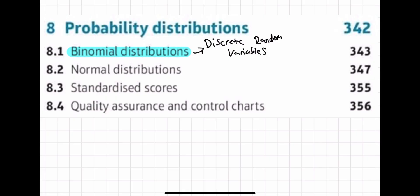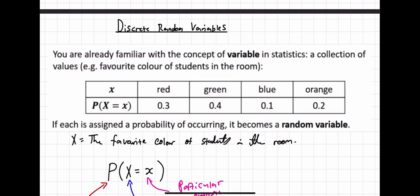Now let's look at what a discrete random variable is. A random variable in statistics is just a collection of values, for example, in this case, favorite color of students in the room. If each is assigned a probability of occurring, it becomes a random variable.